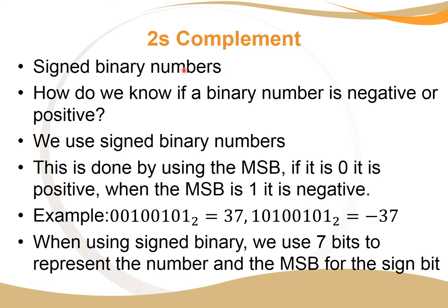Now we come to signed binary numbers. How does a computer know whether a binary number is positive or negative? We use signed binary numbers, which use the most significant bit. For an eight-bit binary number, the most significant bit dictates the sign: if it's a zero, the number is positive; if it's a one, the number is negative. So the sign bit indicates positive or negative, and the remaining seven bits represent the actual number, for example 37.